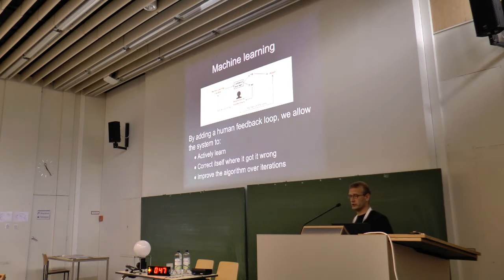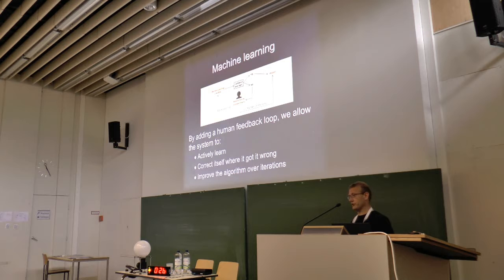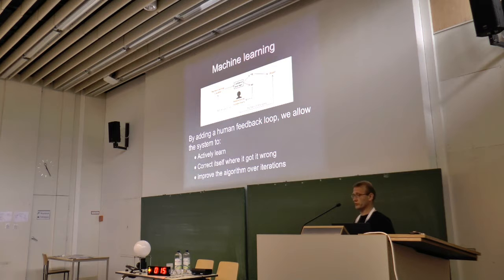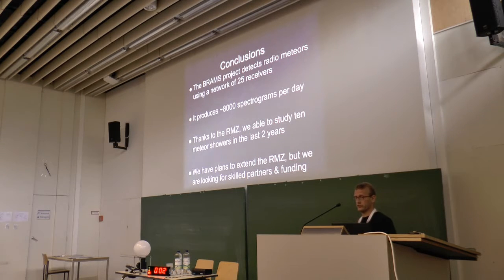The last improvement is to apply machine learning algorithms to the classification. We have an archive of more than half a million classified meteors, and I'm convinced a computer program should be able to learn how a meteor looks and put the rectangles on images itself. This is also feedback we get from many volunteers — the task gets boring after a while. We could show an image with rectangles already placed and ask volunteers whether they are correct, which would be more interesting and would improve classification speed. But for this we need support from people specialised in image recognition and machine learning.